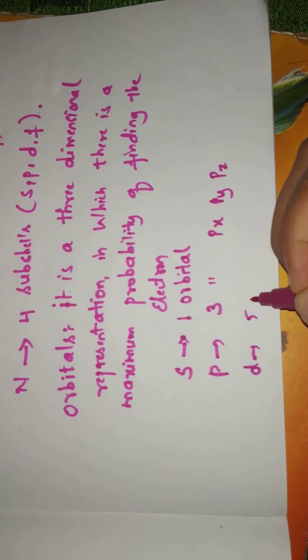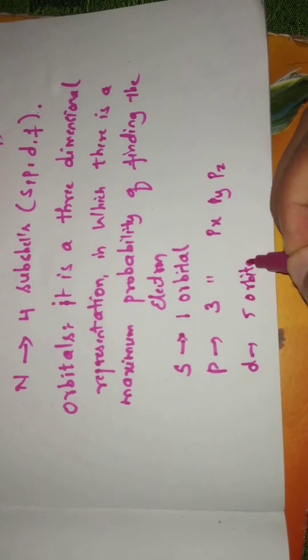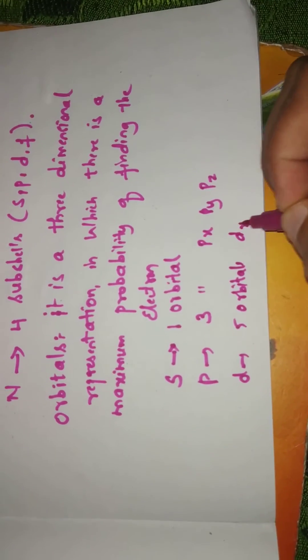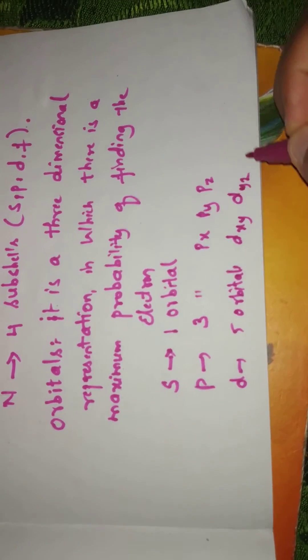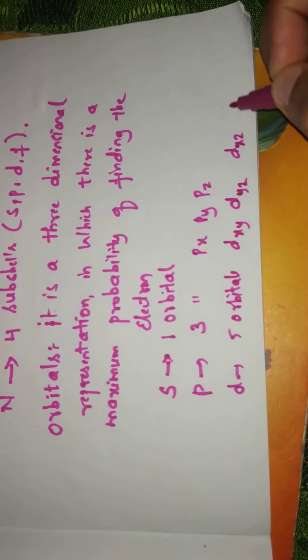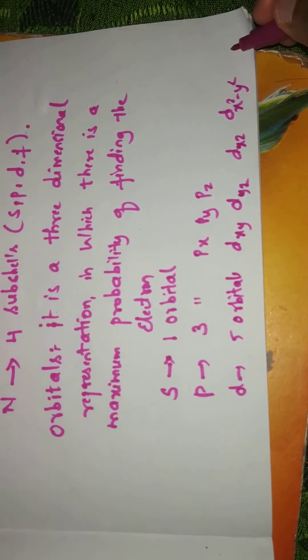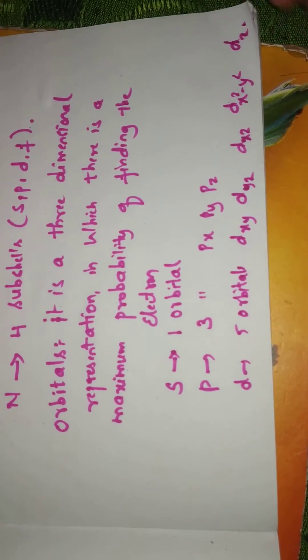D has five orbitals: Dxy, Dyz, Dxz, Dx²-Y², and Dz².